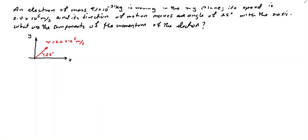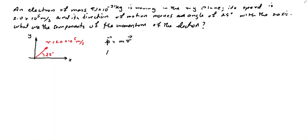Well, in this case we know that the linear momentum, which is a vector, is equal to the product of the mass times the velocity of the particle. If we want to express the linear momentum in terms of its x and y components, we have that p equals p_x i plus p_y j. So what we have to do is calculate p_x and p_y. The linear momentum in the x-direction, p_x, will be equal to the mass times the x component of the velocity of the particle.